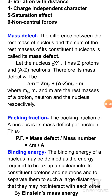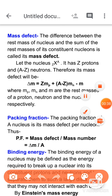Mass defect is related to the stability of the nucleus. We studied that the nucleus has constituent particles — protons and neutrons. If we sum the individual masses of all constituent particles, the total mass will be greater than the mass of the nucleus. If this condition holds, the nucleus will be stable — it will not break and will remain stable. If the opposite condition occurs, the nucleus will become unstable. This is the most important factor, so I am repeating it: you should always remember this point about nucleus stability.